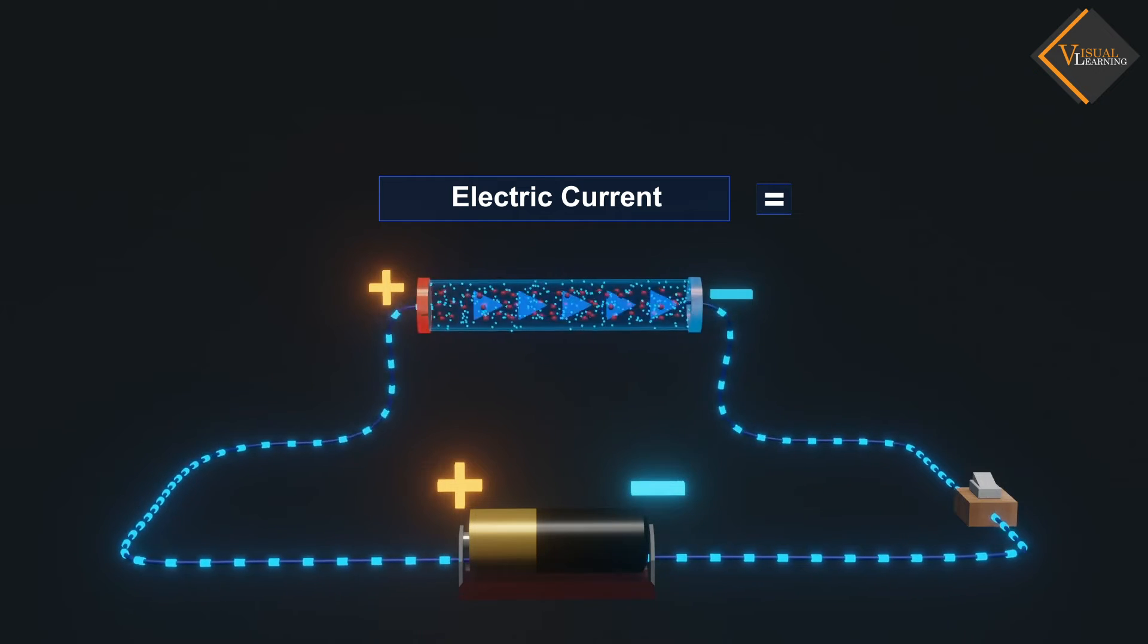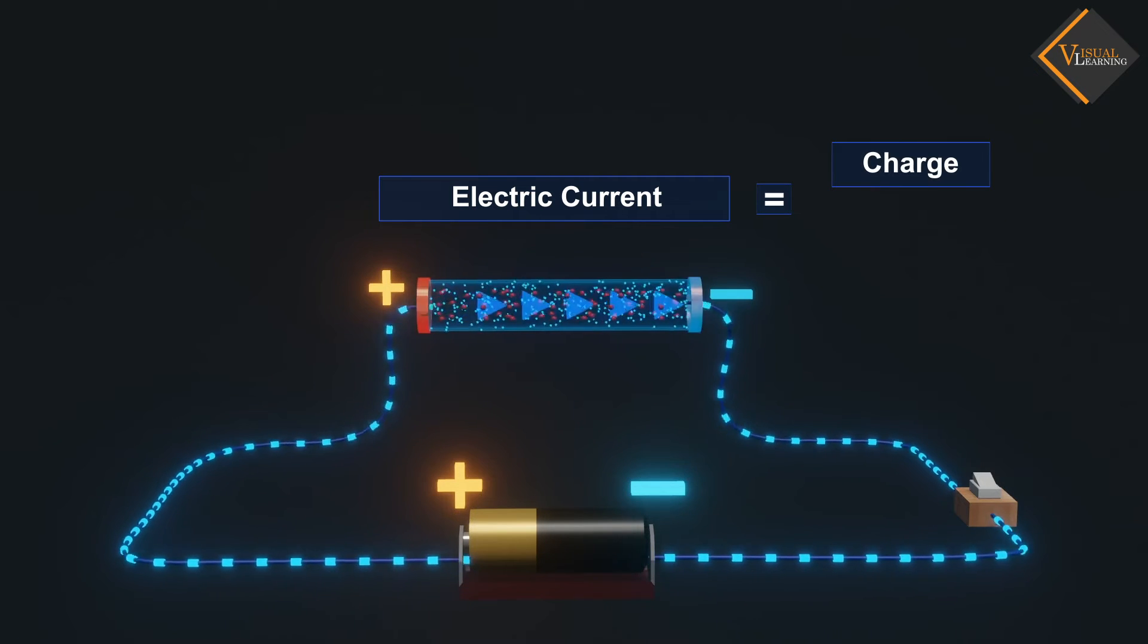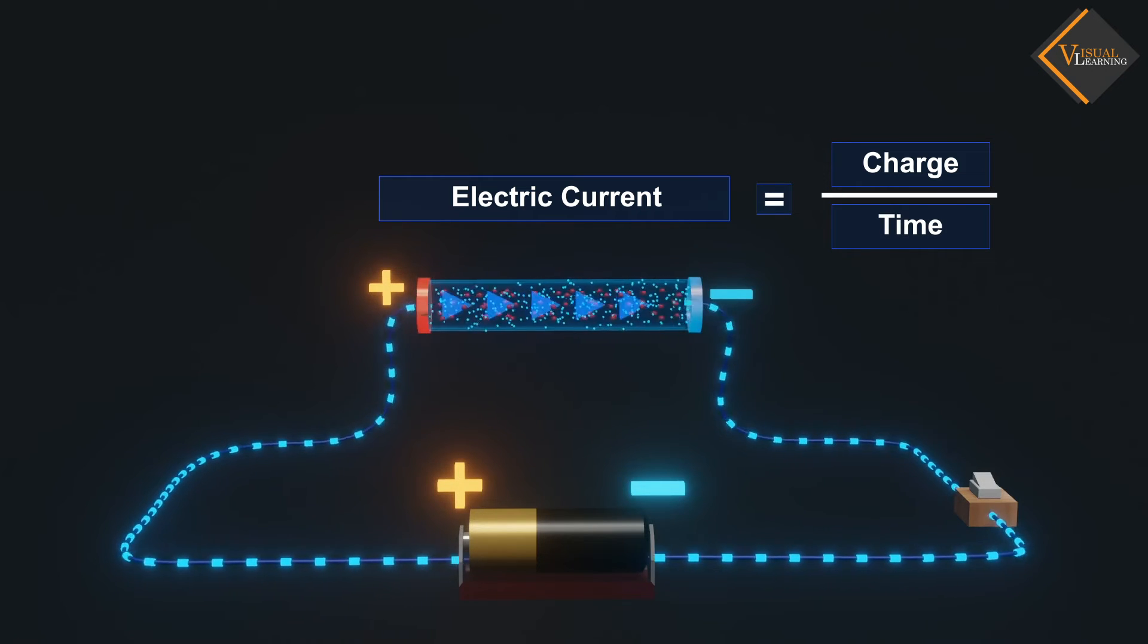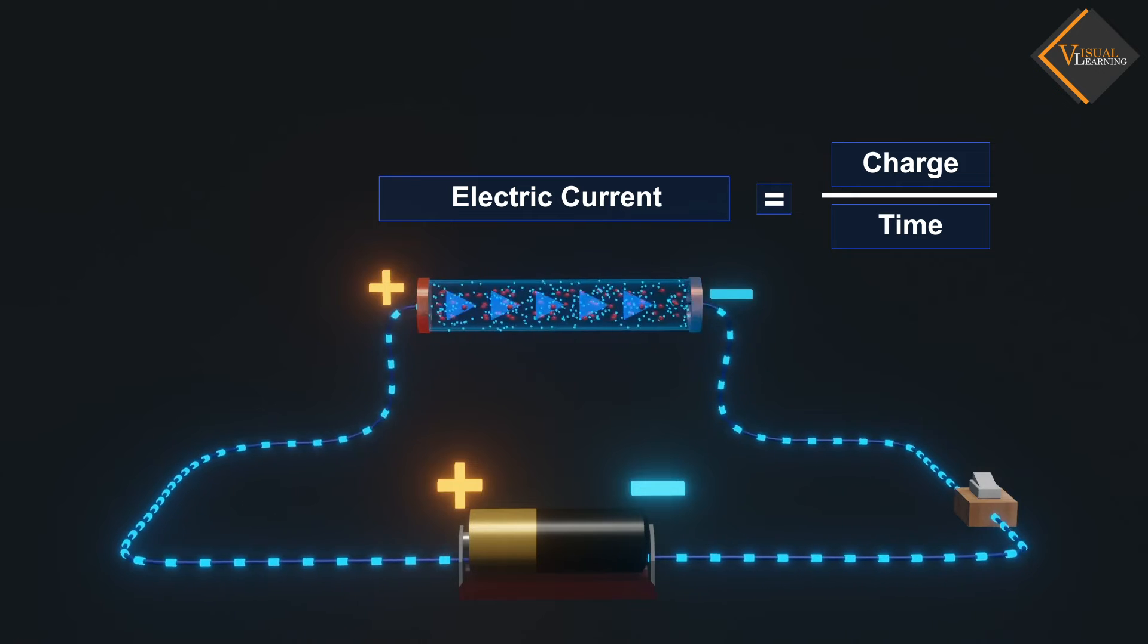Electric current is expressed by the amount of charge flowing through a particular area in unit time. In other words, it is the rate of flow of electric charges.